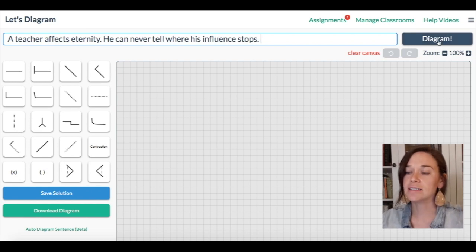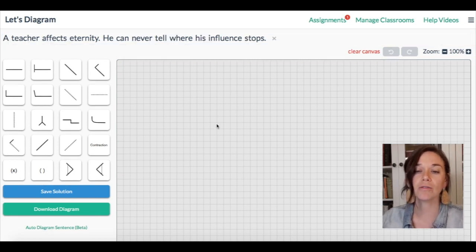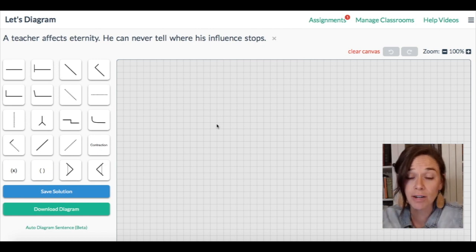Okay, and then I click this diagram button, and now I'm able to pull all the words where I need to pull them onto the workspace. Since we have two sentences, we're going to make two sentence diagrams. The first one is very short because it's a short sentence.